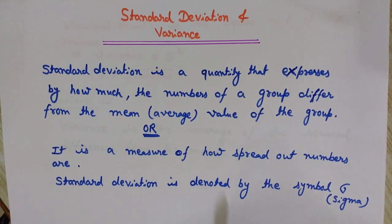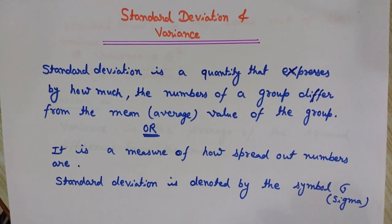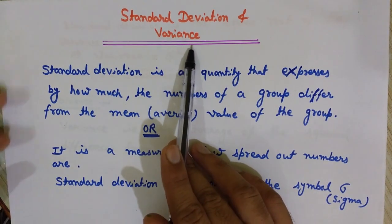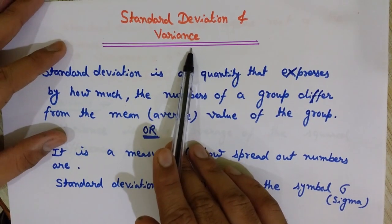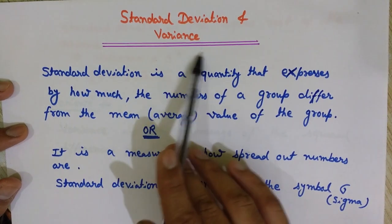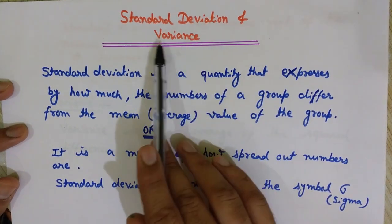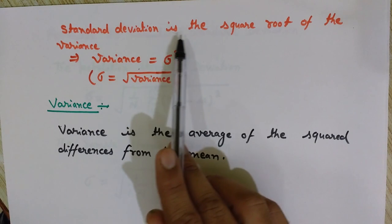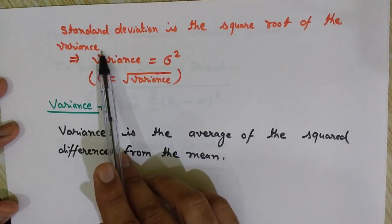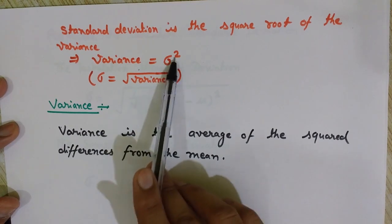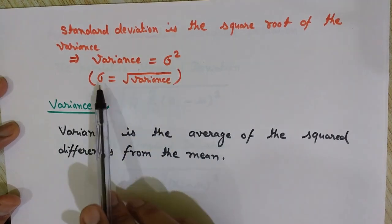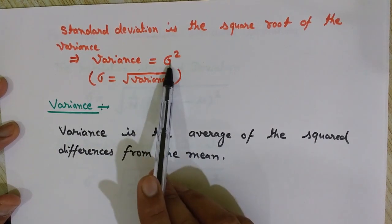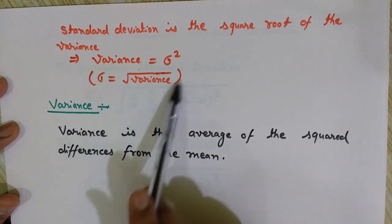We can denote the standard deviation by the Greek letter sigma. The relationship between standard deviation and variance is that variance is denoted by sigma squared. So variance is the square of standard deviation, or in another way, standard deviation is the square root of the variance. Since standard deviation is denoted by sigma, variance is denoted by sigma squared, and sigma equals the square root of variance.